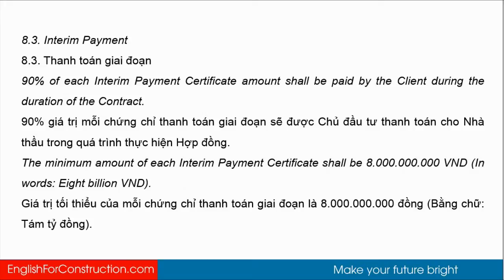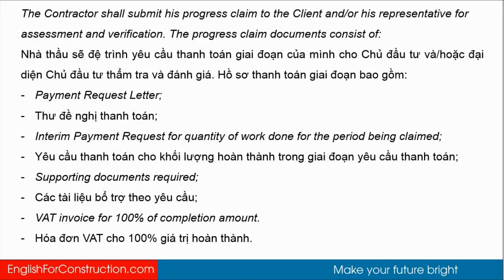8.3 Interim Payment: 90% of each interim payment certificate amount should be paid by the client during the duration of the contract. The minimum amount of each interim payment certificate should be 8 billion VAT. The contractor should submit its progress claim to the client and/or his representative for assessment and verification.